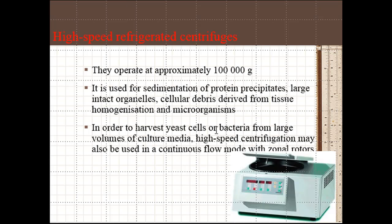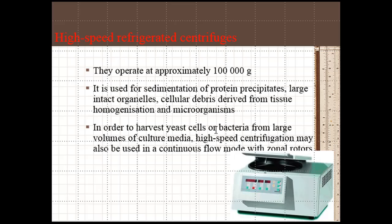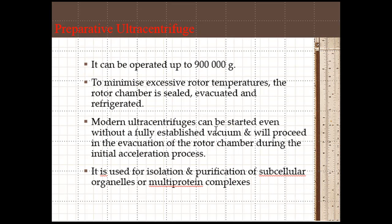High speed refrigerated centrifuge operates up to 100,000 g. It is used for sedimentation of protein precipitates, large intact organelles, cellular debris derived from tissue homogenization, and microorganisms. In order to harvest yeast cells or bacteria from large volumes of culture media, high speed centrifugation may be used in continuous flow mode with the zonal rotor.